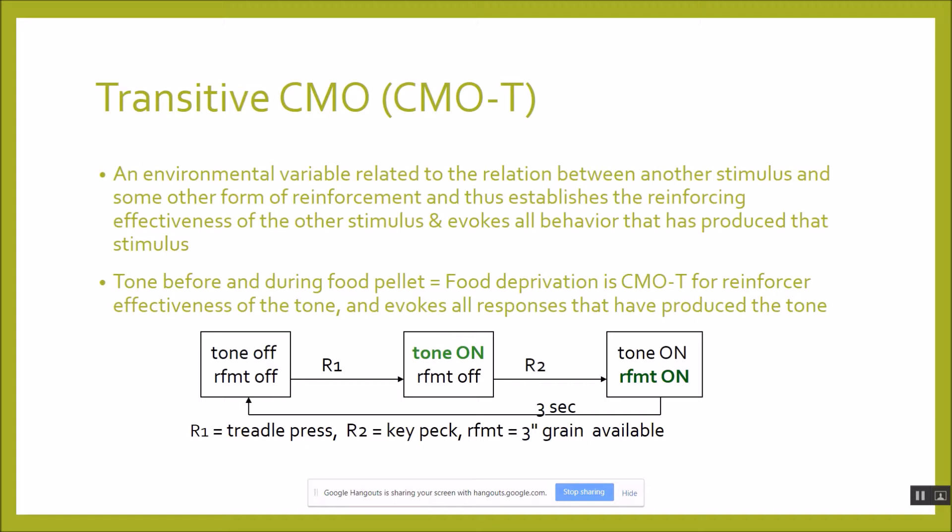The transitive CMO, also labeled as CMOT, is one of three types of CMOs — transitive, surrogate, and reflexive. A transitive CMO is an environmental variable that's related to the relation between another stimulus and some other form of reinforcement, and thus establishes the reinforcing effectiveness of that other stimulus and evokes all behavior that has produced that stimulus. An example from rat studies: a tone comes on, then a couple seconds later food is presented. Food deprivation is a CMOT for the reinforcing effectiveness of the tone. Normally a tone means nothing to a rat, but when the tone reliably precedes a food pellet, anything the rat can do to make the tone come on becomes valuable because food is coming.